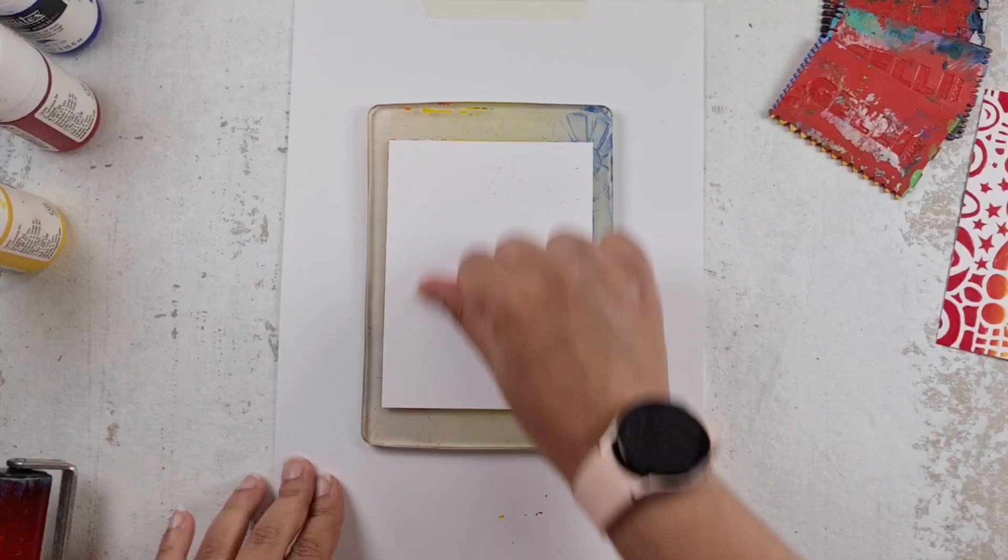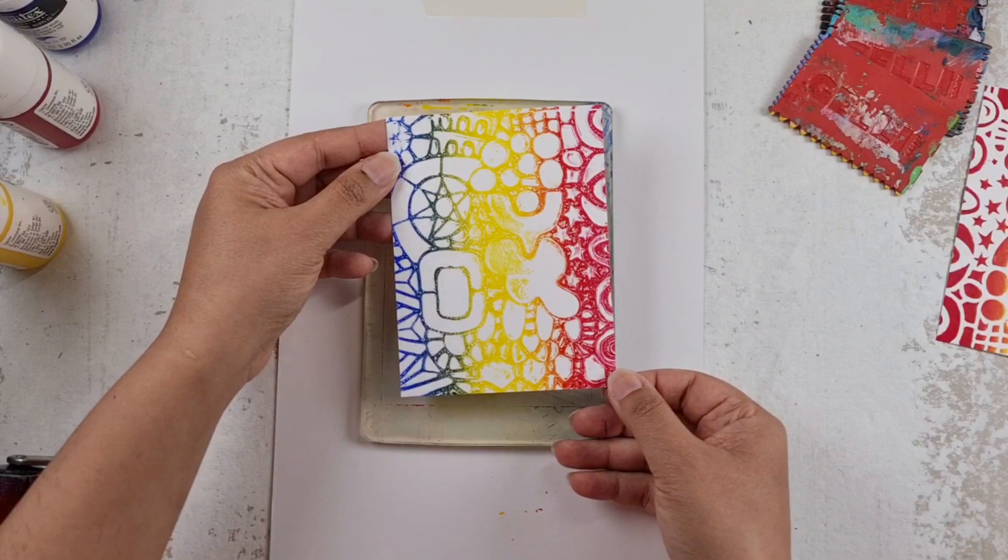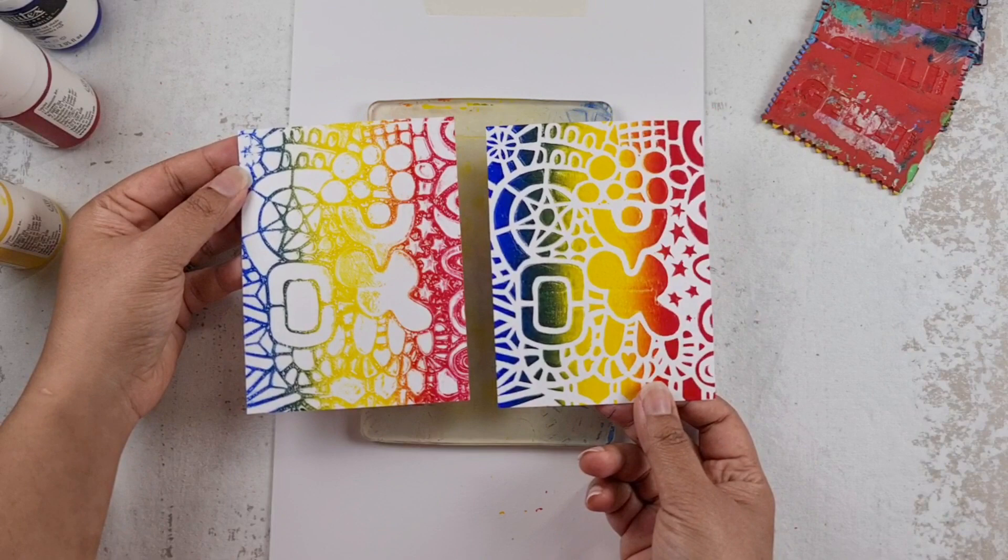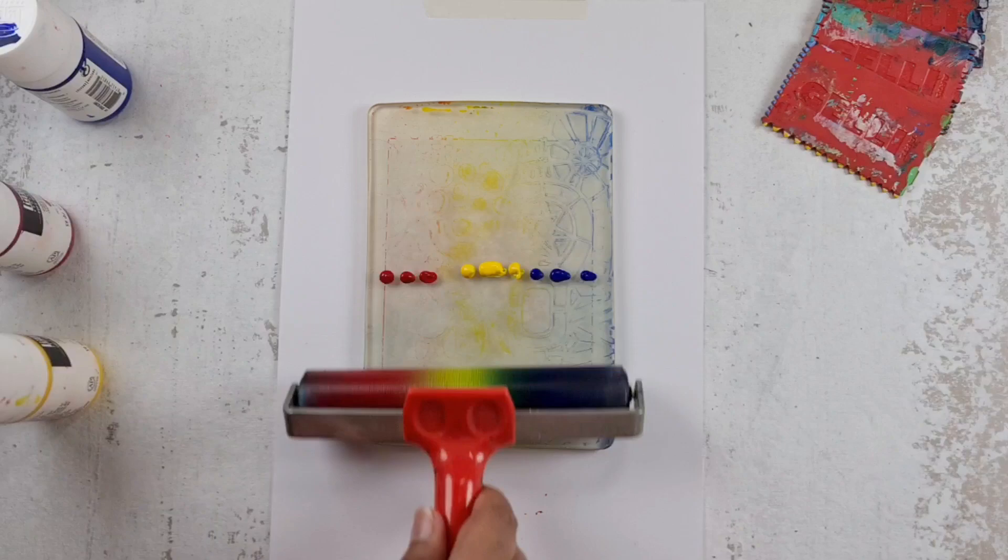So I'm really making sure that I'm pressing on the paper really well, giving the paint a chance to grip onto the paper. And then pulling a print. When you rub your paper and you lift your paper off, that process is called pulling a print.